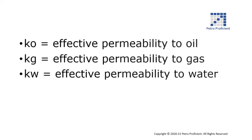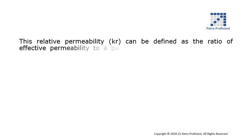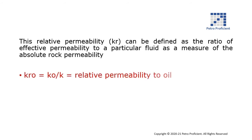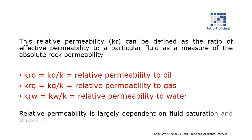KO is effective permeability to oil. KG is effective permeability to gas. KW is effective permeability to water. Relative permeability can be defined as the ratio of effective permeability to a particular fluid as a measure of the absolute rock permeability. KRO is the relative permeability to oil. KRG is the relative permeability to gas. KRW is the relative permeability to water. Relative permeability is largely dependent on fluid saturation and phase wettability.